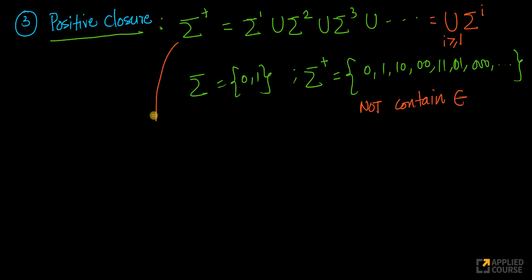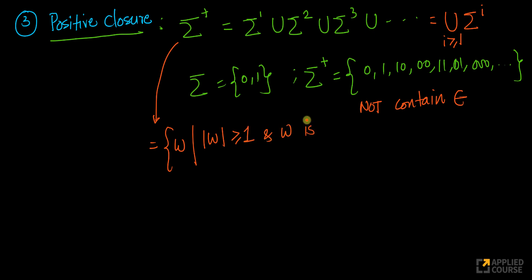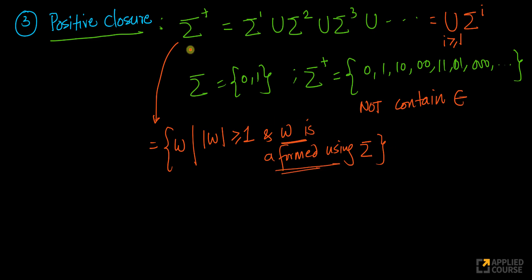Sigma plus can also be defined as the set of all words w such that the length of w is greater than or equal to 1, where w is a word formed using sigma. We don't always have to state this explicitly because it's implicitly understood from the notation sigma plus. This is called the positive closure.